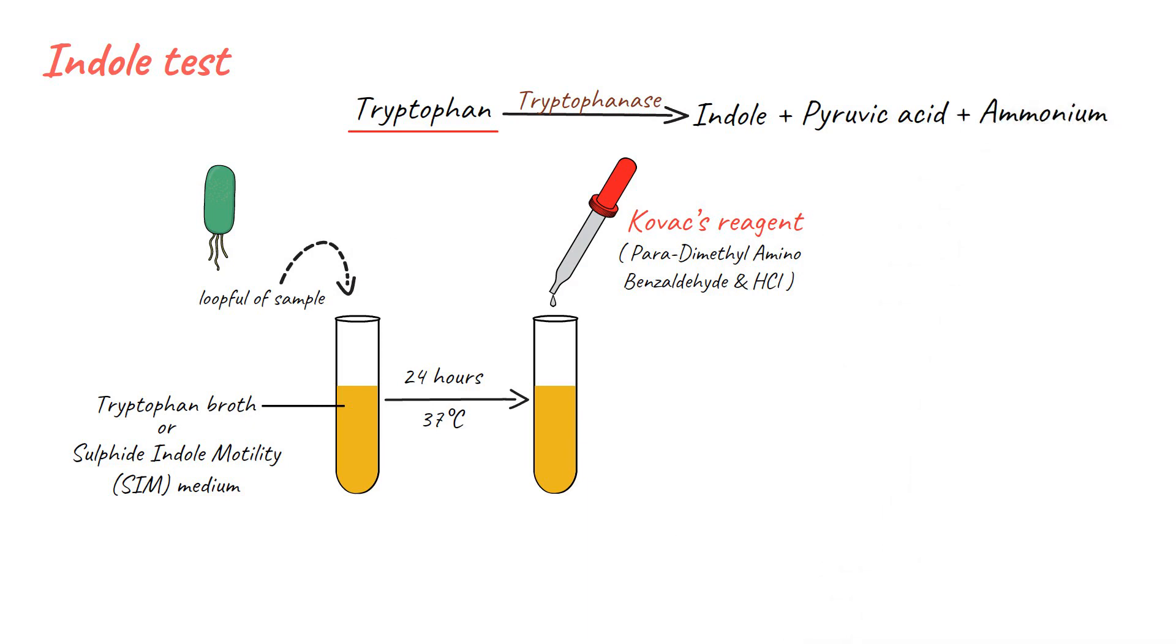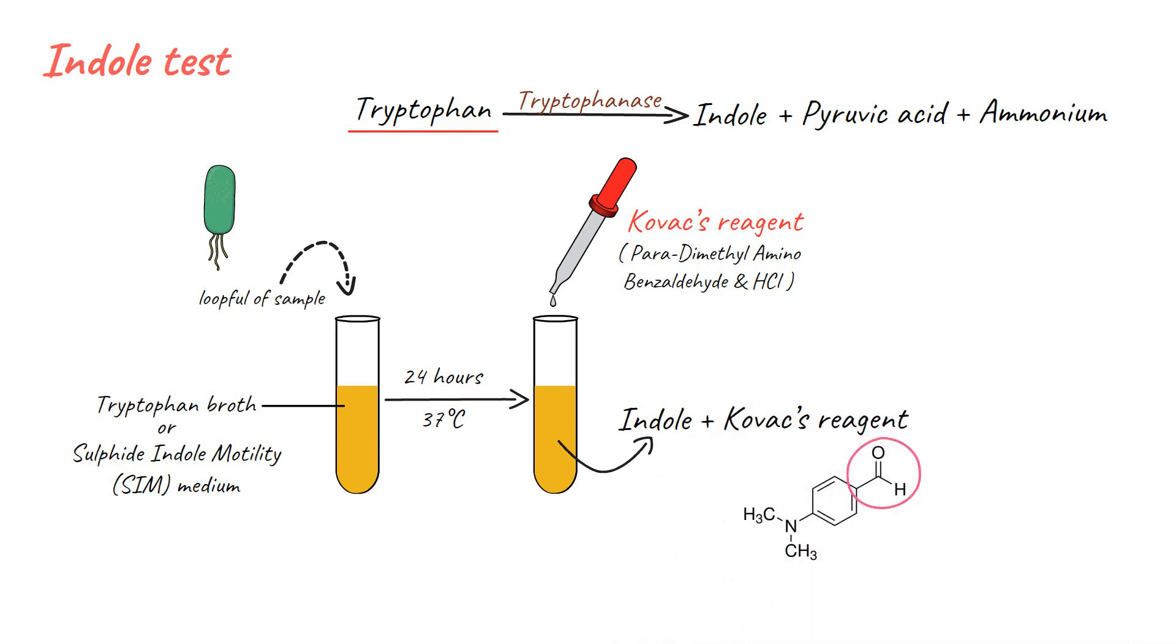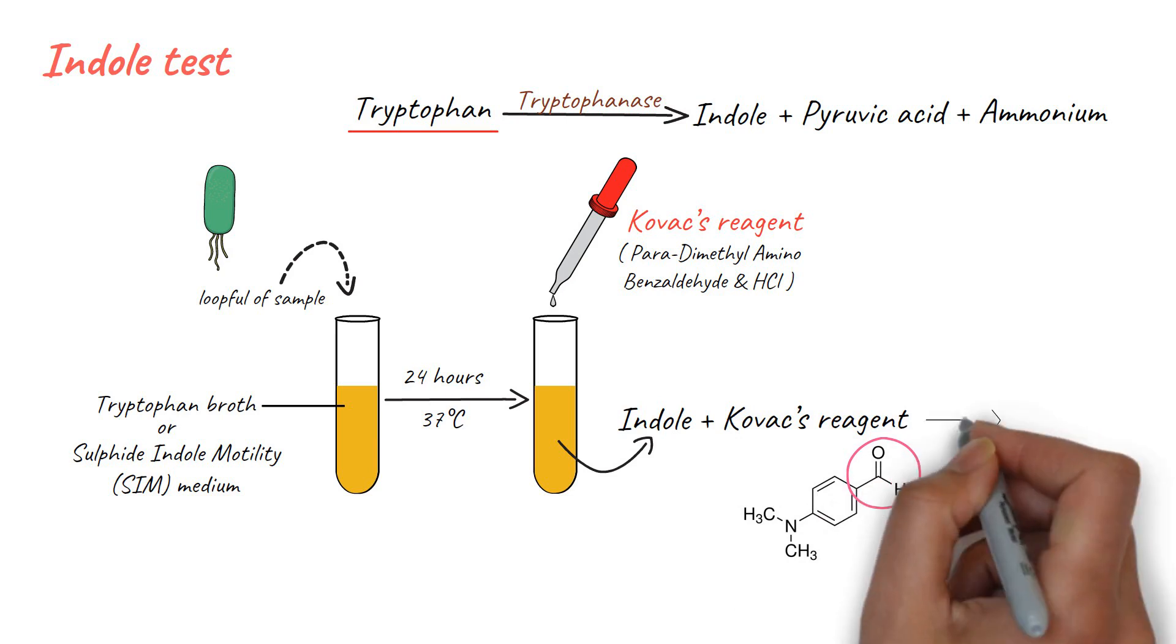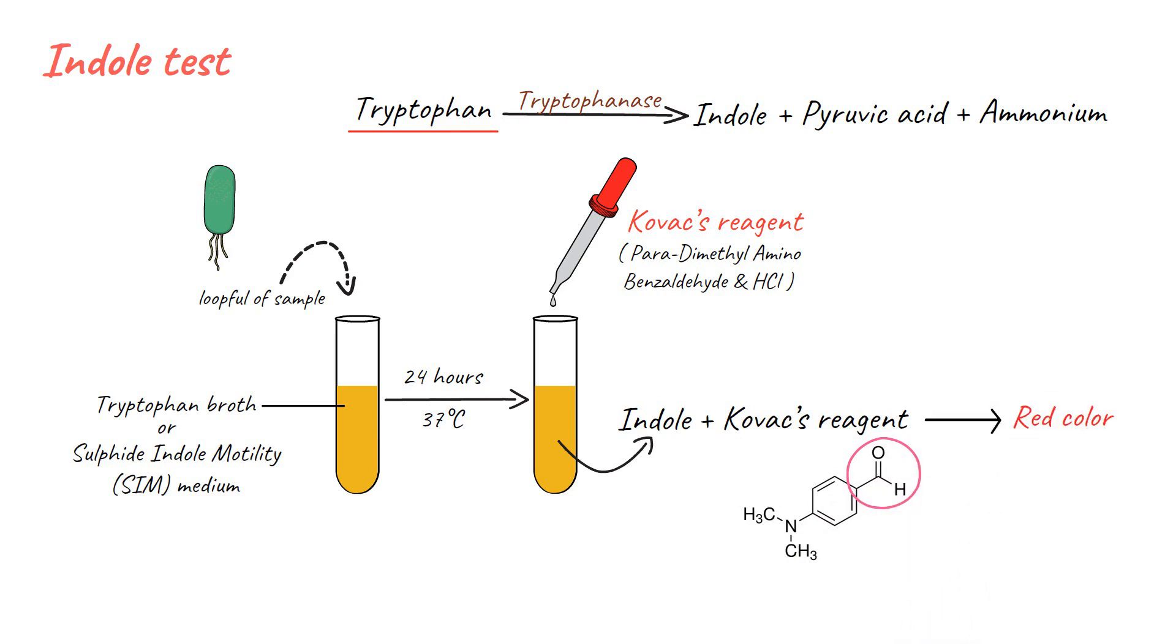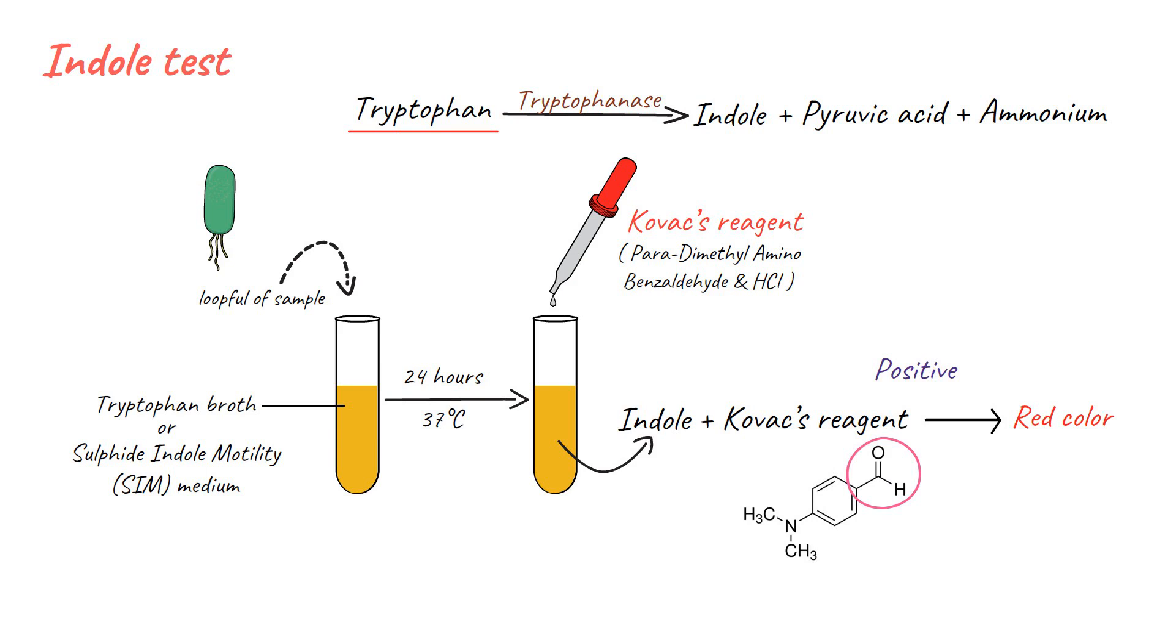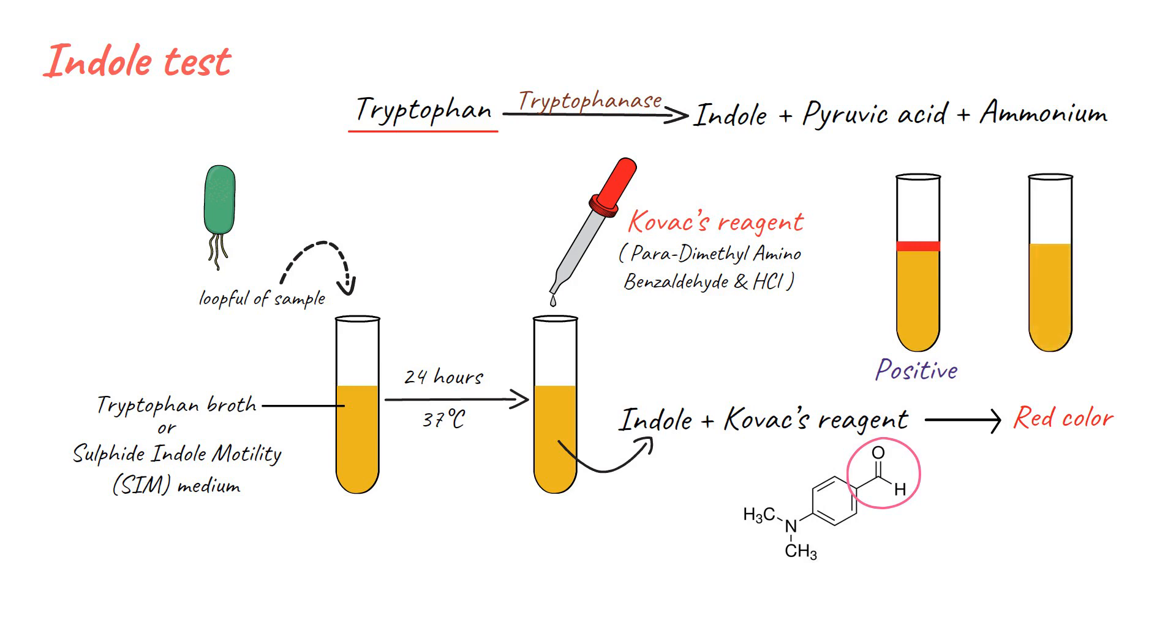The presence of indole in the tube can be detected by Kovacs reagent. The reaction of indole with the aldehyde group of Kovacs reagent will give a red color. The positive result will be indicated by the formation of a red color at the top of the tube. If there is no such color formation, consider the test negative.